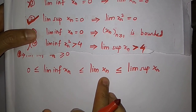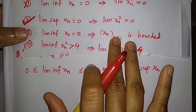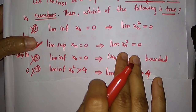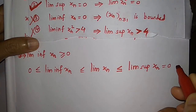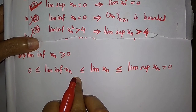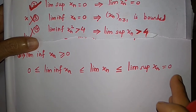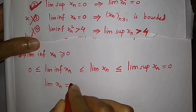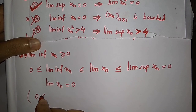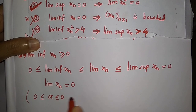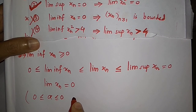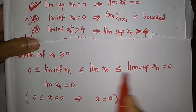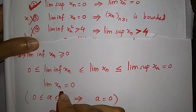From the second option we have limit supremum of xn = 0. So in our chain, 0 ≤ lim inf xn ≤ lim xn ≤ 0. This means lim xn = 0, because if 0 ≤ a ≤ 0 for a real number a, then a = 0.